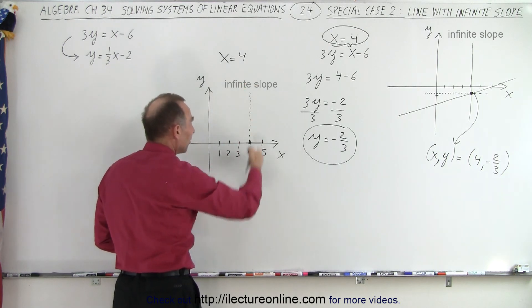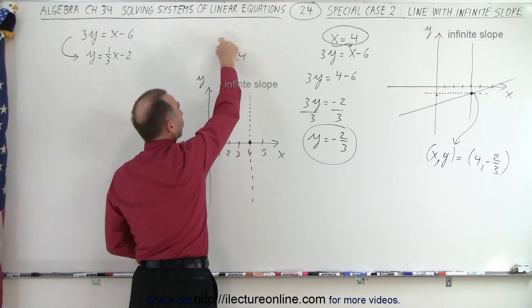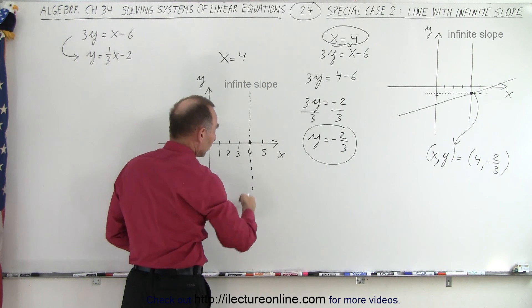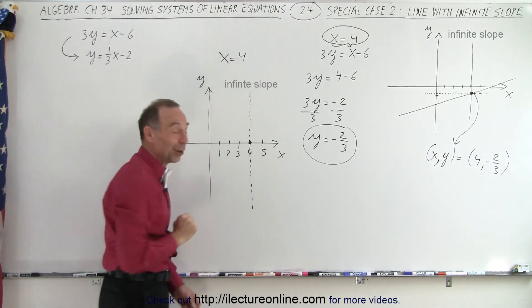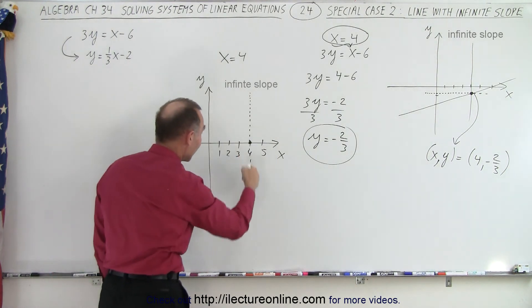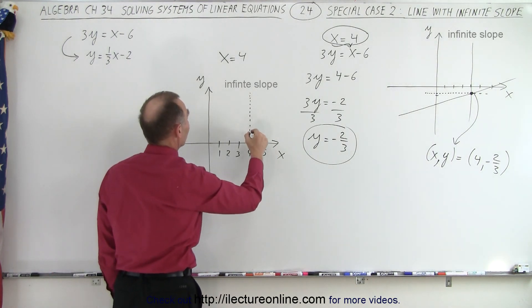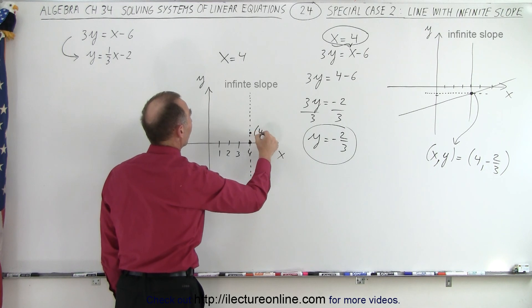Well, it would be any point that falls on this line right here. Notice that it doesn't matter what the y value is, and there's no restriction on the y value, but every point on this line here, and of course if I make that look a little bit more like a line, there we go, every point on that line has the value x equals 4. So this one would be, for example, 4 and 1.